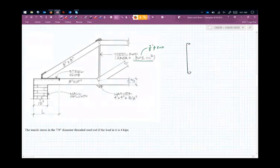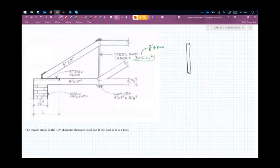We can say the rod has a force of 4 kips, 4,000 pounds, 4 kips going in both directions.